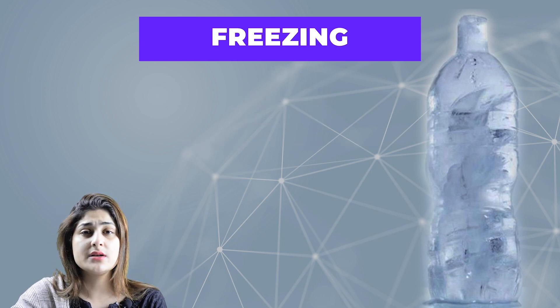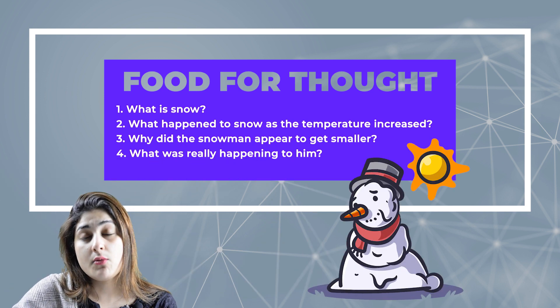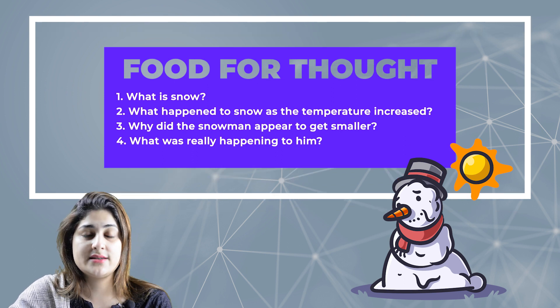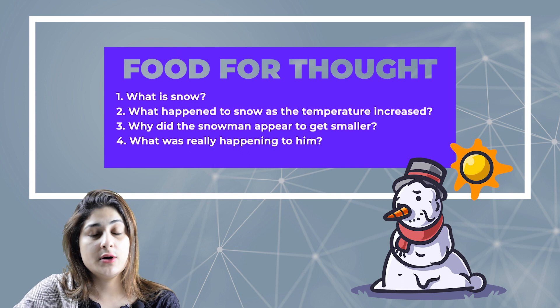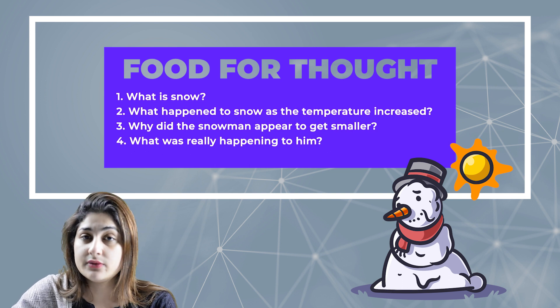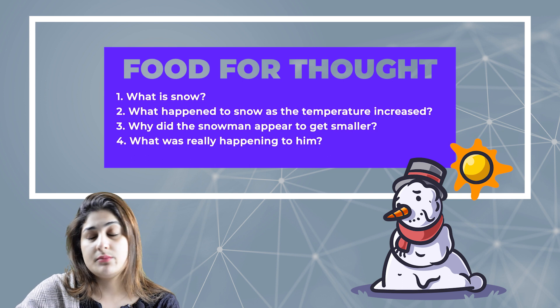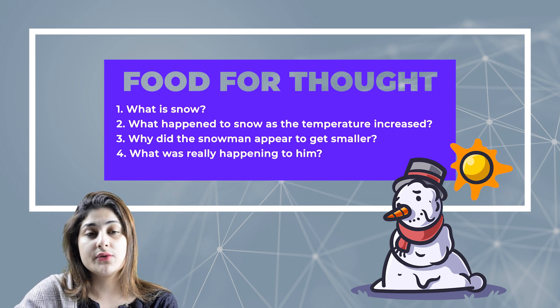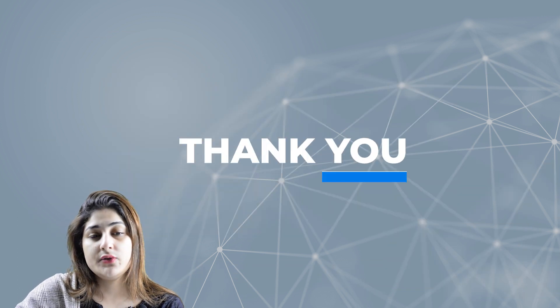I hope melting and freezing are much clearer to you now. Here are a few more questions: all of you must be familiar with snow or a snowman — what actually is snow, what formulates it, and what happens to snow as the temperature increases? You can even relate this to the melting of glaciers and give me all the possible reasons causing glacier melt. Lastly, why did the snowman appear to get smaller — what was really happening to it? Thank you so much, I hope all of you have understood.